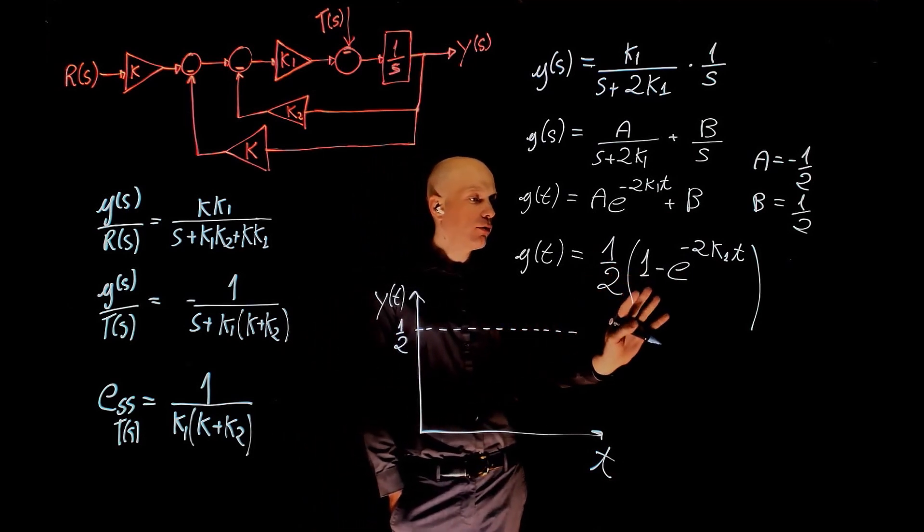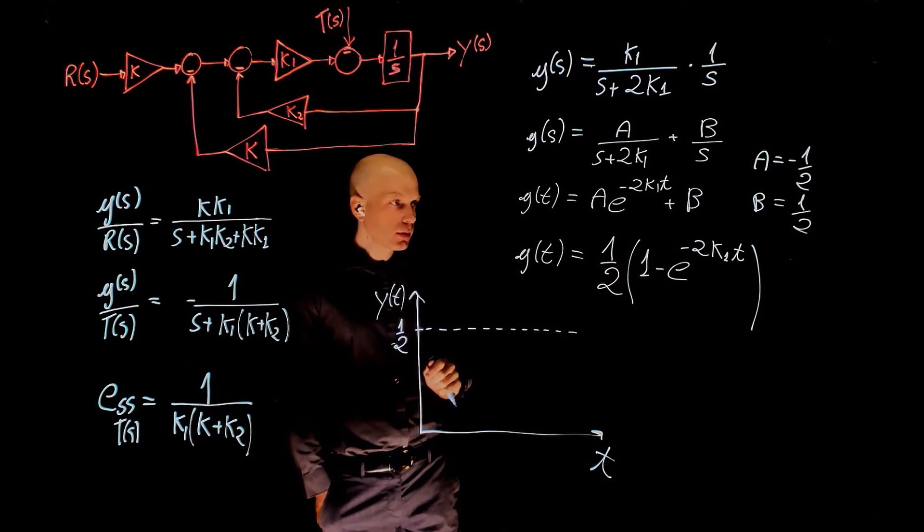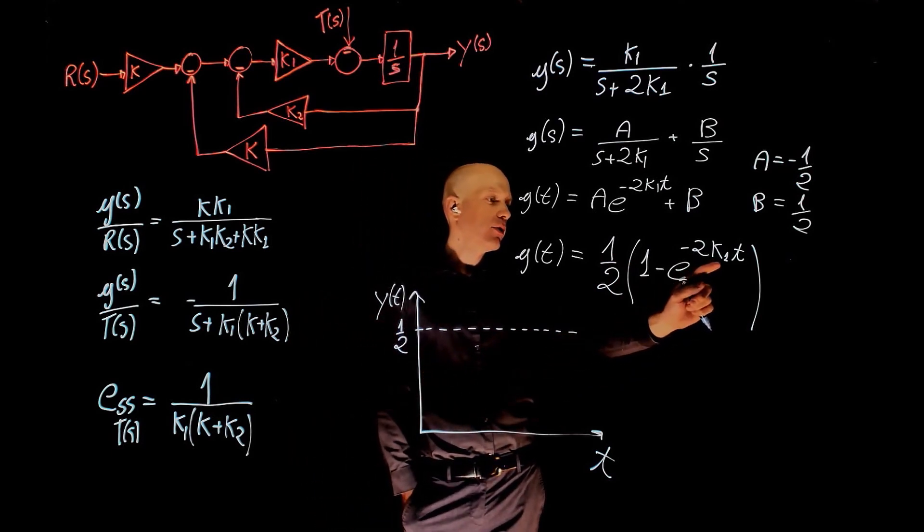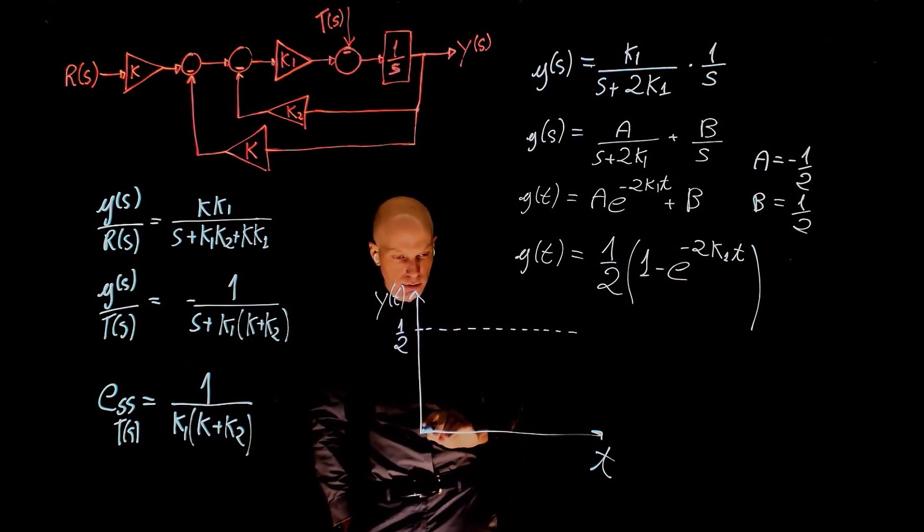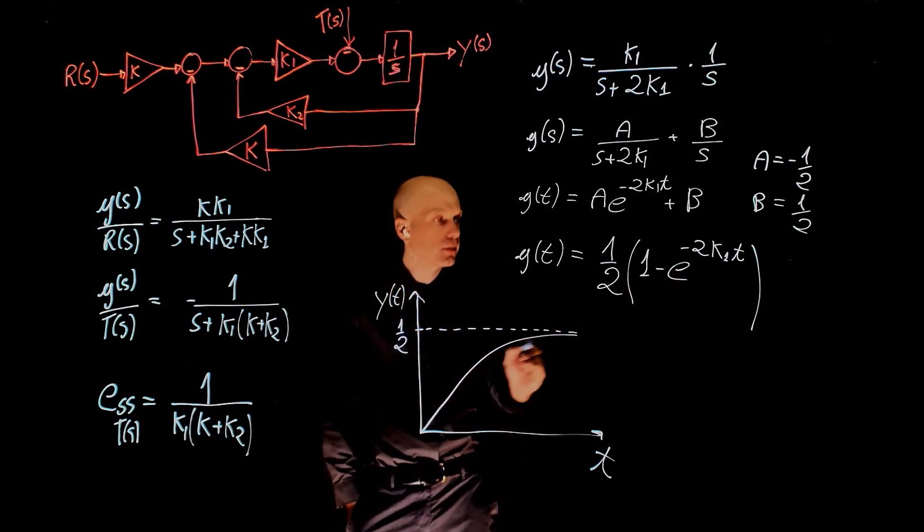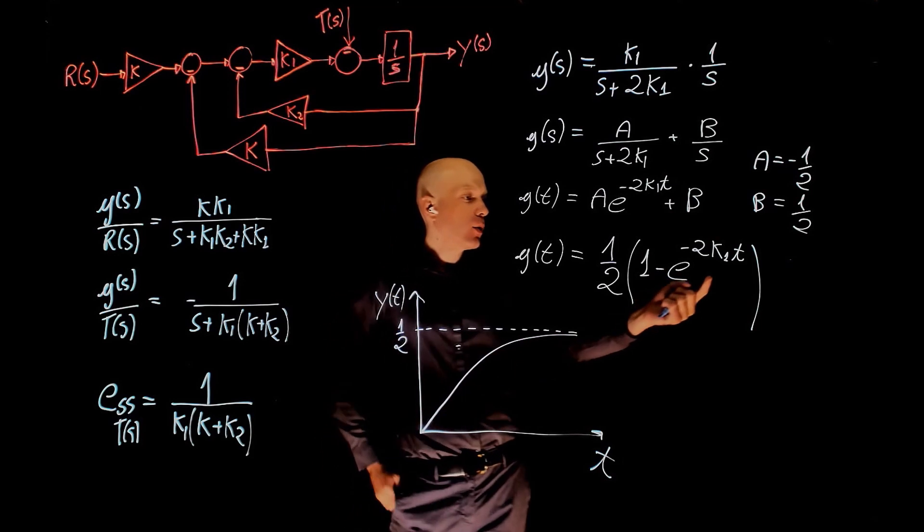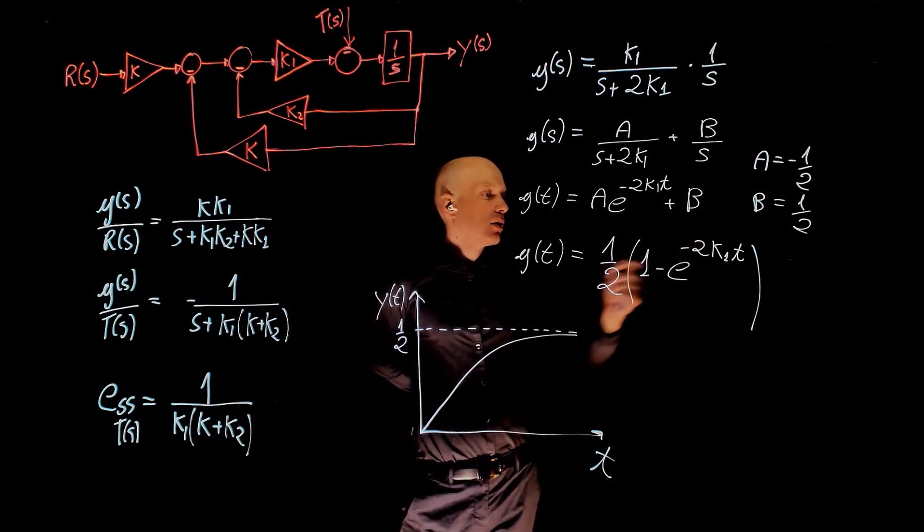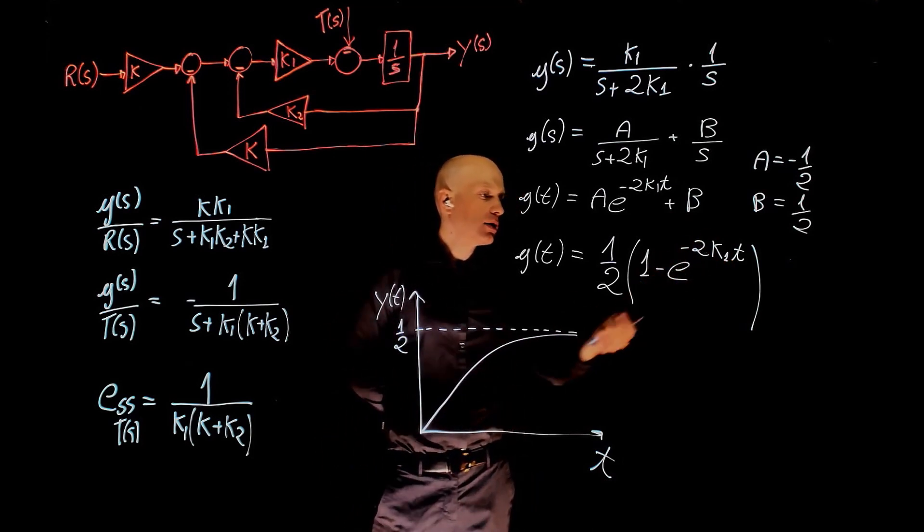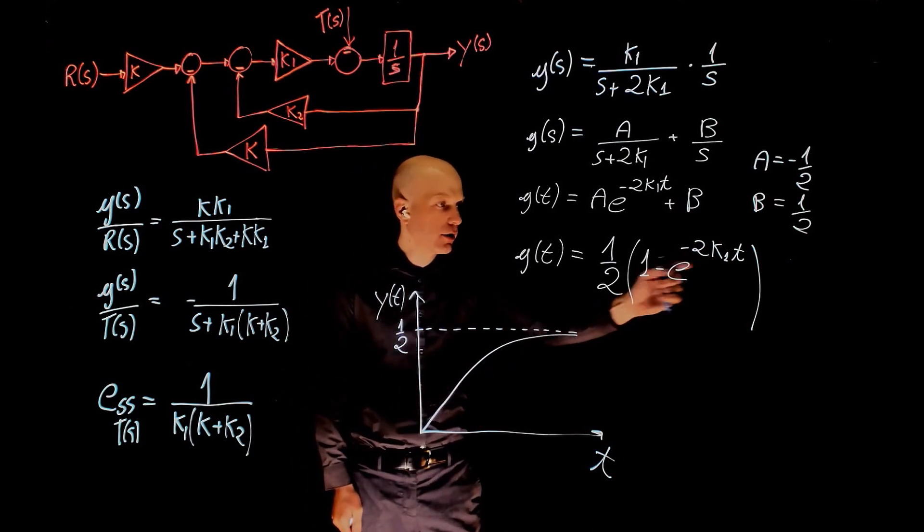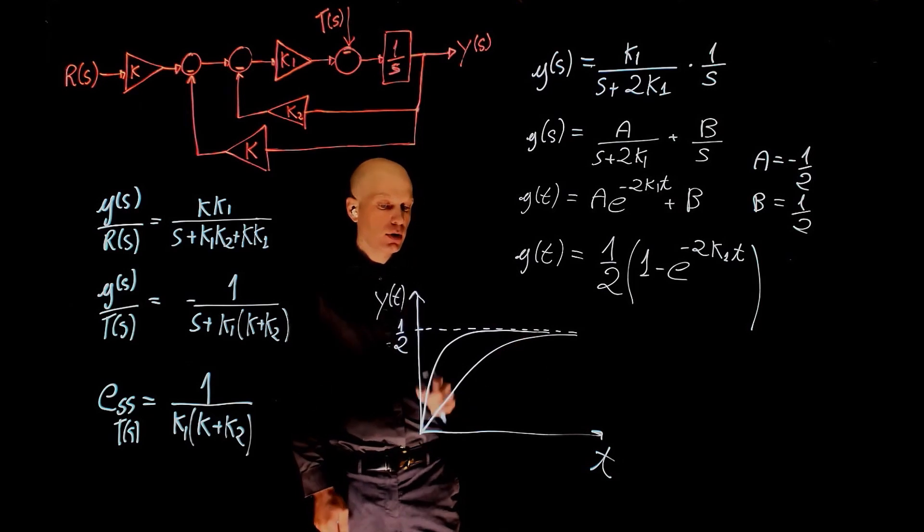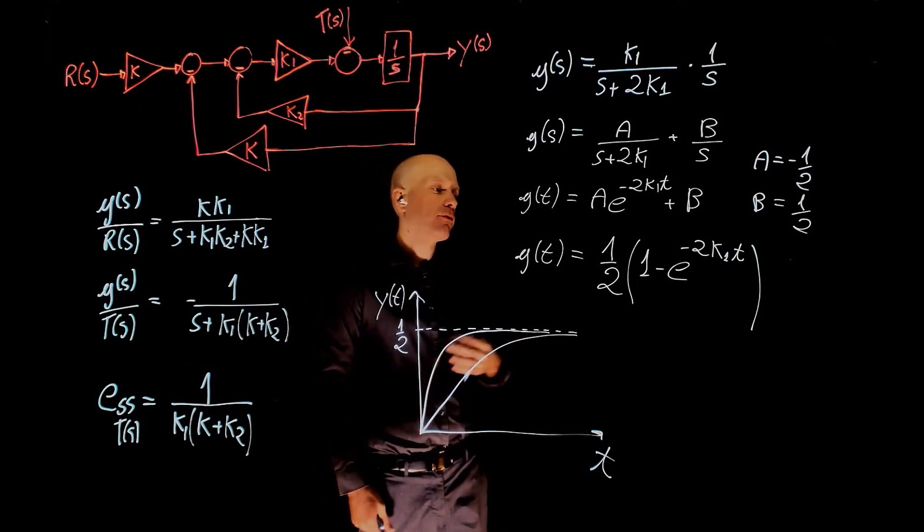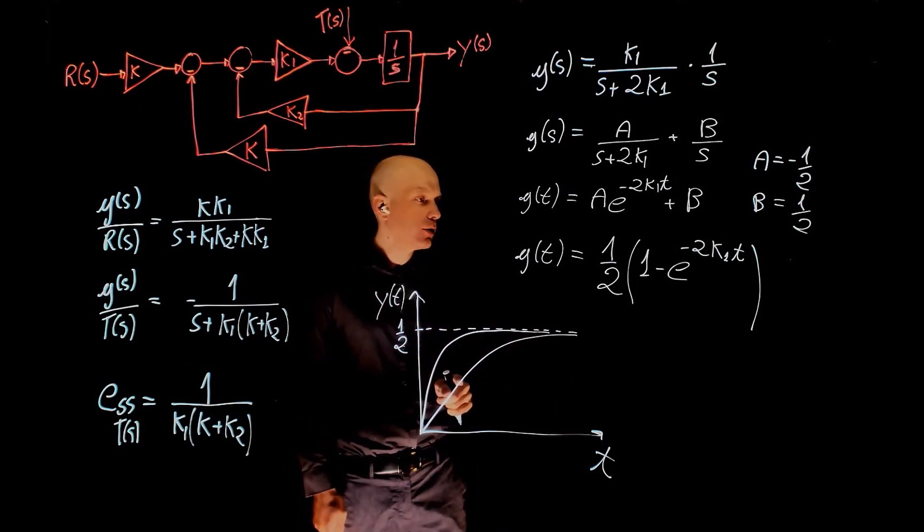It follows an exponential. Now if k1 is very small, this exponential decays slowly, so it's going to go up like that. If k1 increases, now this exponential decays faster and faster. So for a higher value of k1, the exponential will be sharper.